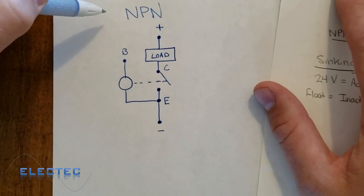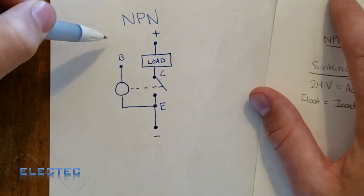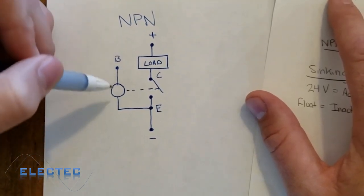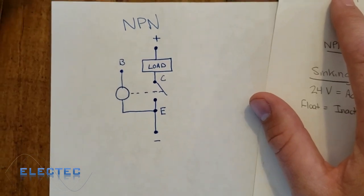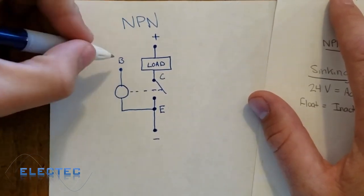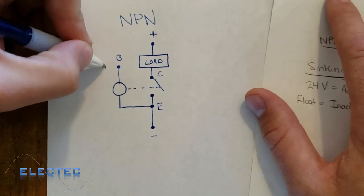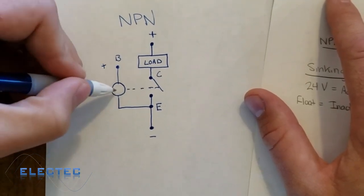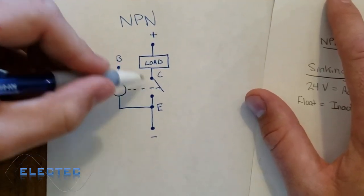that an NPN transistor sinks. So I have to source it in order for it to sink. They must work together. So what happens is, I source this with a positive voltage on my base. And when I do that, this relay turns on, and this switch pulls in.